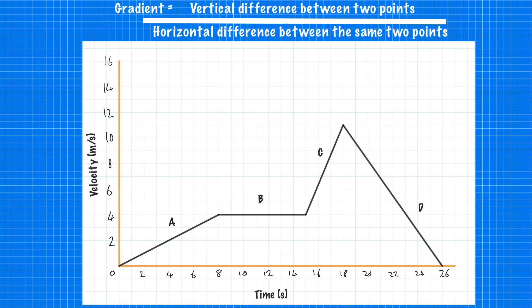Now we can use this graph to work out the acceleration at any one of these points. Much like distance time graphs, it's all to do with the gradient. And remember we said the gradient is the vertical difference between two points divided by the horizontal difference between the same two points.